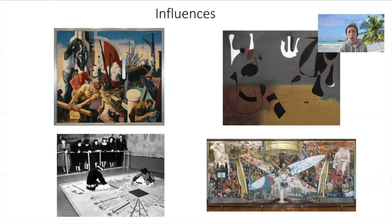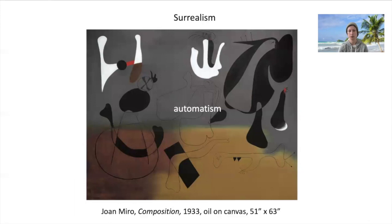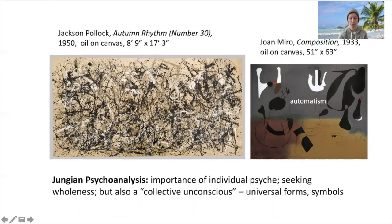Jackson Pollock was like a sponge, absorbing influences from many different sources: from American social realism and regionalist art of the 1930s, surrealism and the impact of recent European émigrés like Miró on the right, Mexican mural painting, and Native American sand painting. Sand painting was featured at the Museum of Modern Art in 1941 — the museum brought in people from the Navajo Nation to demonstrate sand painting techniques in front of visitors. He was also influenced by surrealist automatism — that automatic drawing style without thinking too much about the end result, letting your subconscious guide the drawing.